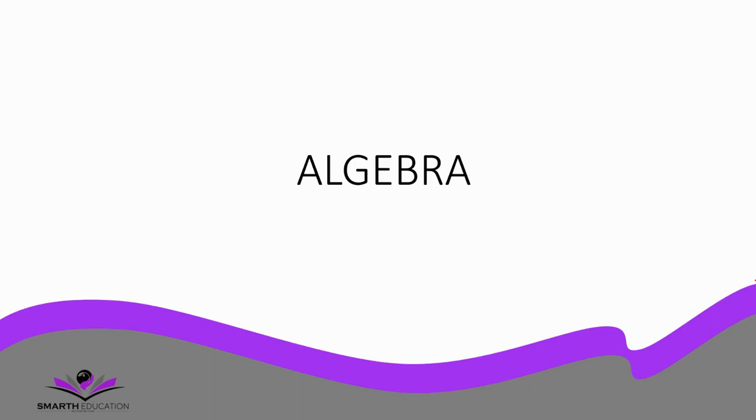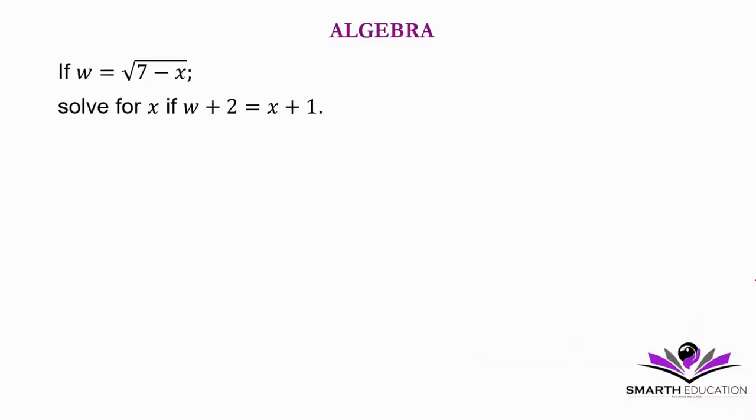Welcome back. Let's do question 2c2. If w equals the square root of 7 minus x, solve for x if w plus 2 equals x plus 1.